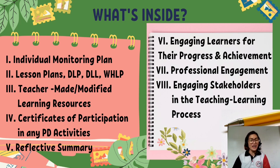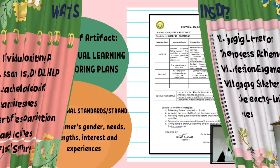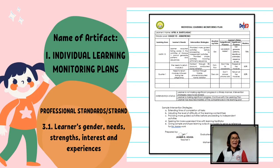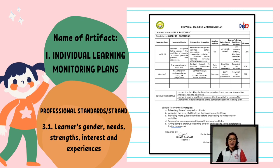The first artifact is the Individual Learning Monitoring Plan. The professional standard or strand under this artifact is the learner's gender, needs, strengths, interests, and experiences. My attachment here is the Individual Learning Monitoring Plan form that I used for my students. I have two examples here — two students.